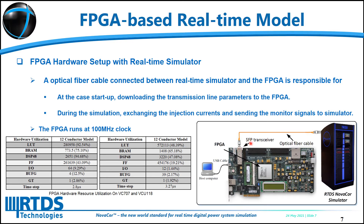The connection between FPGA and RTDS is shown in this figure. A USB cable is used to download the hardware design into the FPGA, and an optical fiber cable is connected between the FPGA and the simulator — here, an RTDS NovaCor is used. This optical cable is responsible for downloading the transmission line parameters to FPGA at case startup. In each simulation timestep, this cable is also used to exchange the injection current between the simulator and the FPGA, and to send monitor signals such as voltage and current signals to the simulator.